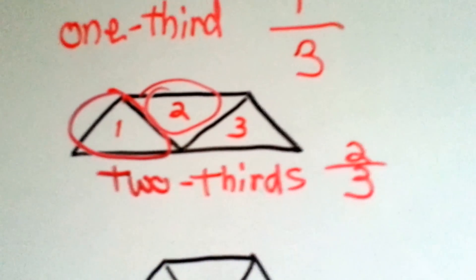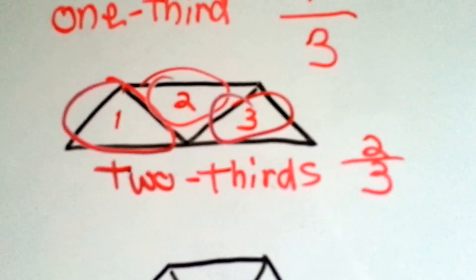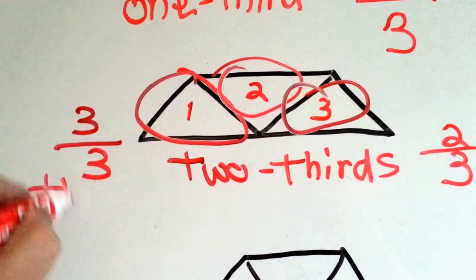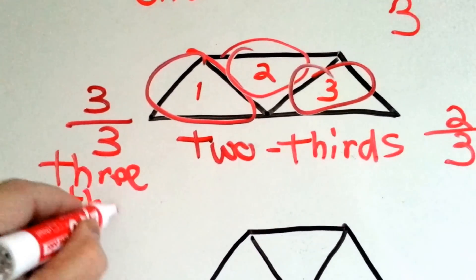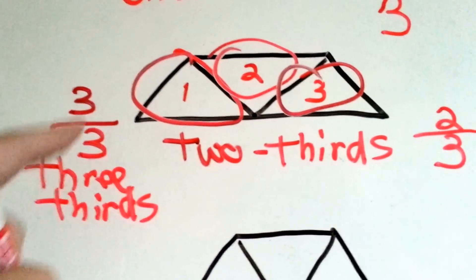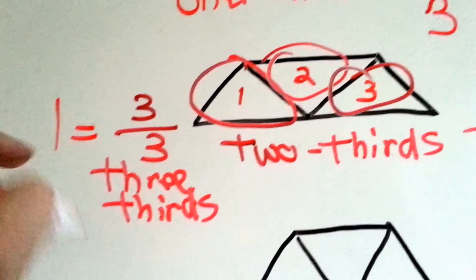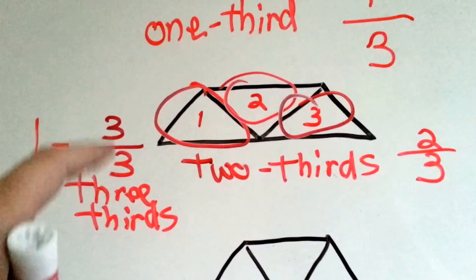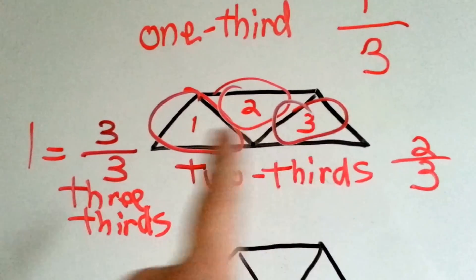Well, guess what? If you ate all three parts, you would eat three thirds. And three thirds is equal to the whole thing. See? When the number on the top and the bottom are the same, it's equal to the whole thing.